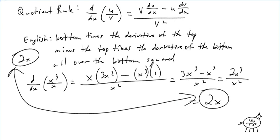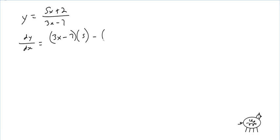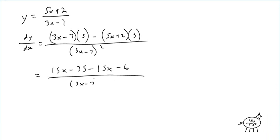Let's do a nice friendly example. If y = (5x + 2)/(3x − 7), then dy/dx equals the bottom times the derivative of the top, minus the top times the derivative of the bottom, all over the bottom squared. Simplifying the numerator: 15x − 35 minus 15x minus 6, all over (3x − 7)².